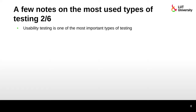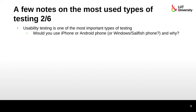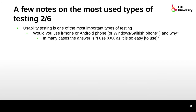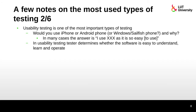Usability testing is one of the most important types of testing. Consider why people prefer iPhone, Android, or Windows phones — in many cases the answer is 'I use it because it's easy to use.' In usability testing, the tester determines whether the software is easy to understand, learn, and operate.